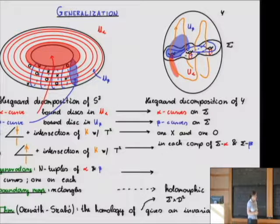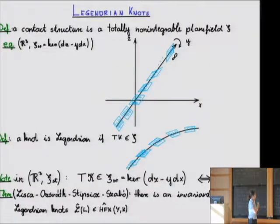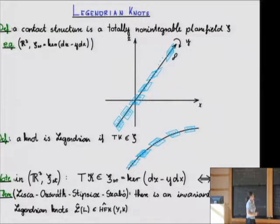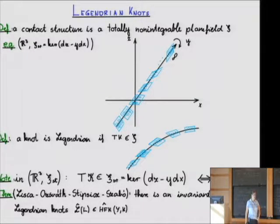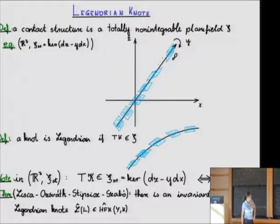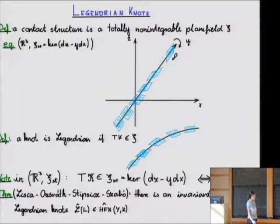You can prove that this homology gives an invariant of the Legendrian knot. You can also generalize Legendrian knots to an arbitrary three-manifold: a contact structure is a plane field in your three-manifold, and a Legendrian knot is something tangent to this plane field at every point. This gives back the original definition for S³.